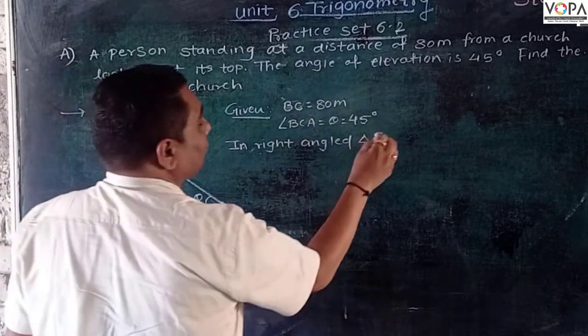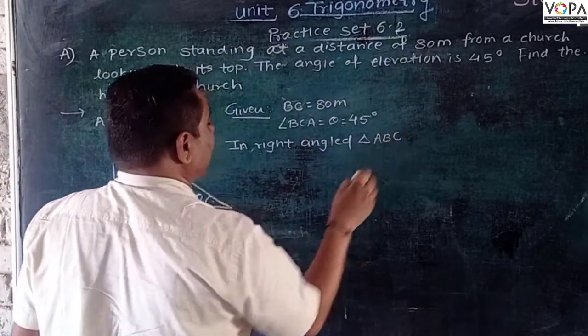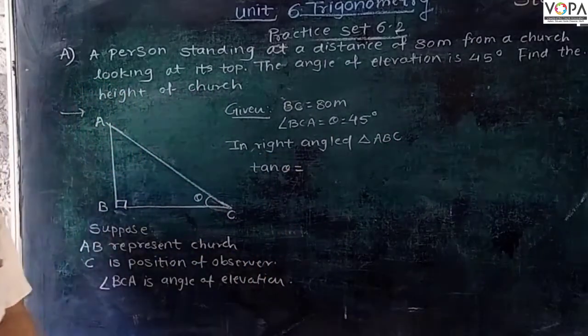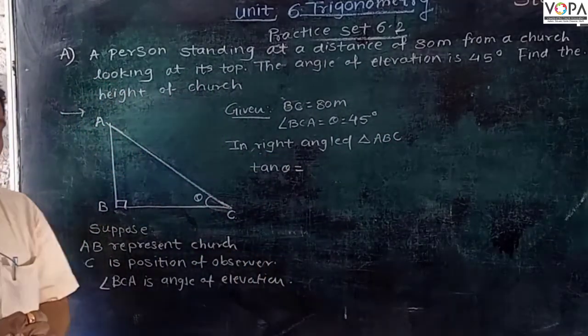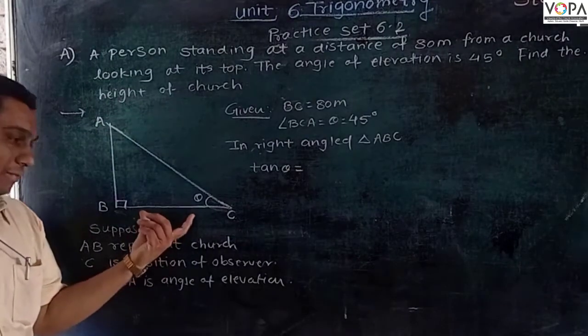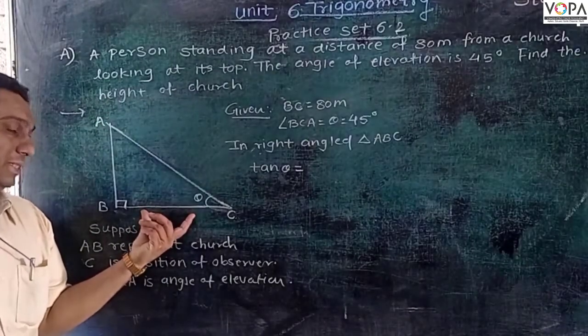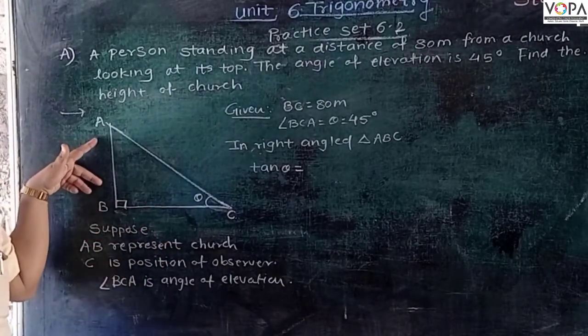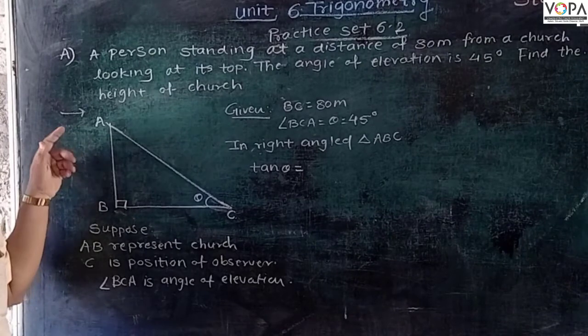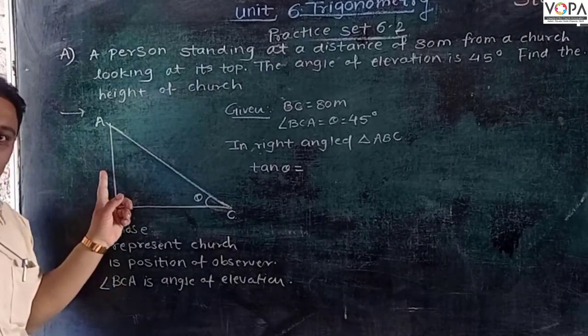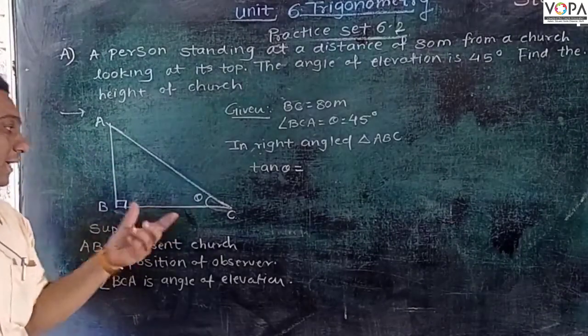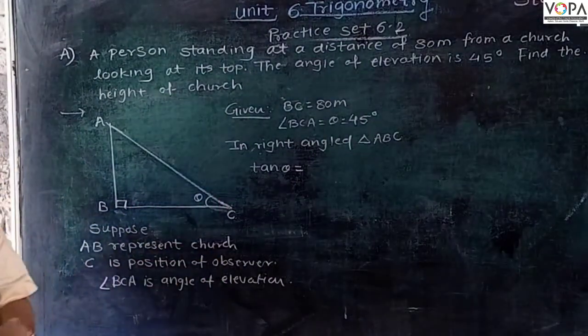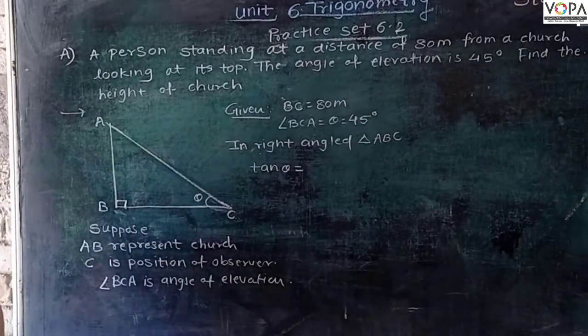In right angle triangle ABC, tan theta equals... The relation between AB and BC is given by tan theta. So tan theta equals opposite side AB upon adjacent side BC.